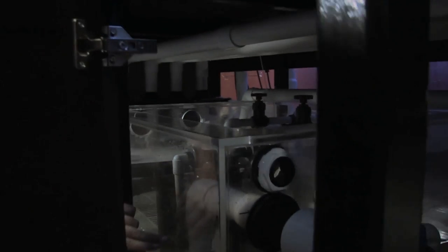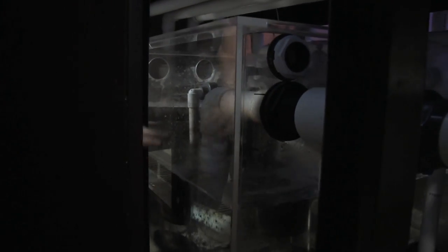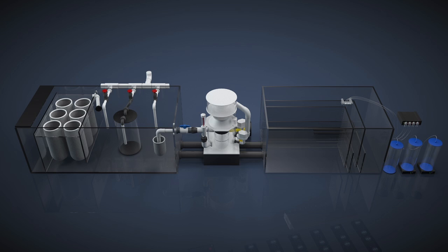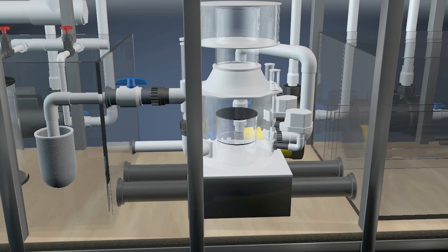You'll also see on this end of the sump, we have the outlet of the protein skimmer emptying. That empties back into the sump. Now we're going to move forward and check out the protein skimmer.